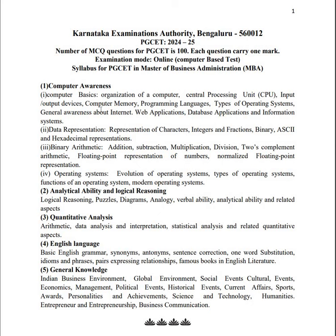The first section is computer awareness, which is divided into four sub-sections. First is computer basics — organization of the computer, how input is taken and output is given, CPU functionality, input and output devices. For example, the monitor or the printer as output devices. And computer memory — RAM, ROM, volatile and non-volatile memory and all those concepts we have to take care of.